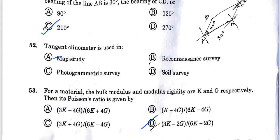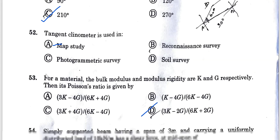Question 52: Tangent clinometer is used in map study, reconnaissance survey, photogrammetric survey, or soil survey. Tangent clinometer is used for plane table surveying. Plane table surveying is used to create maps. Option A, map study, is the correct answer.